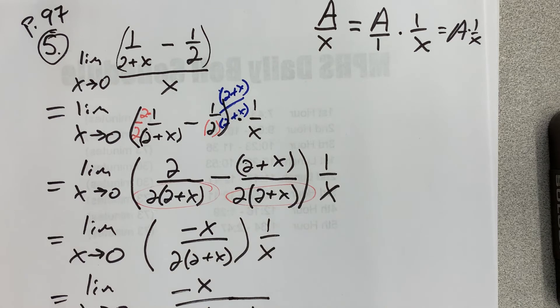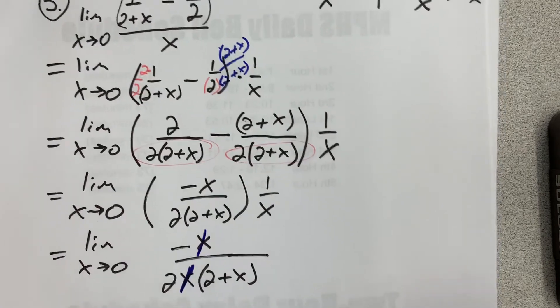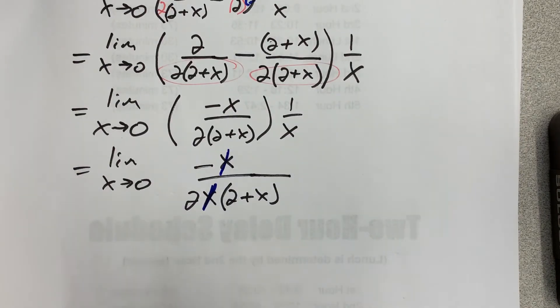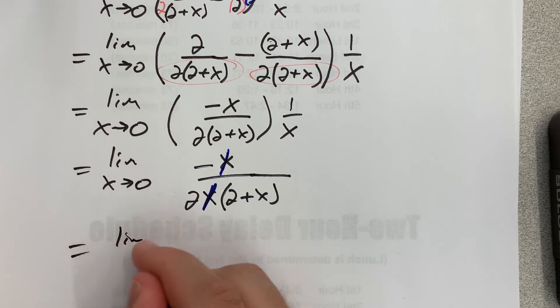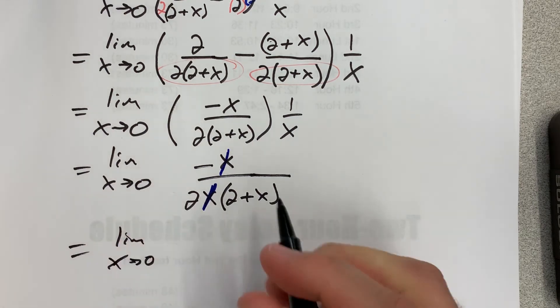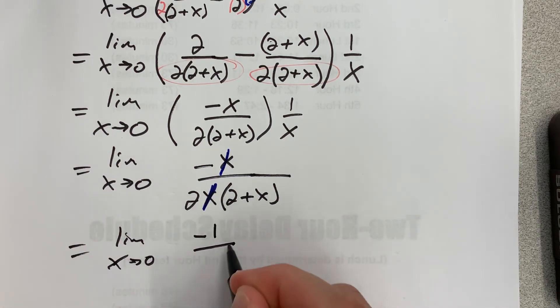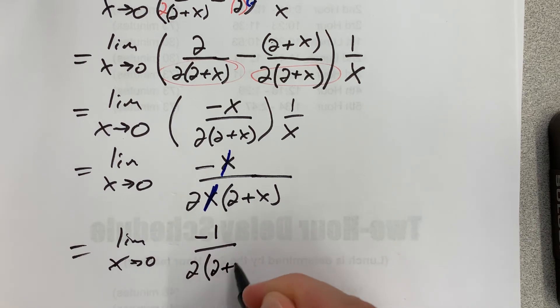Oh, lookie! x over x is 1 over 1. Fantastic. So now I can write this: the limit as x approaches 0 of negative 1 over 2 times 2 plus x.